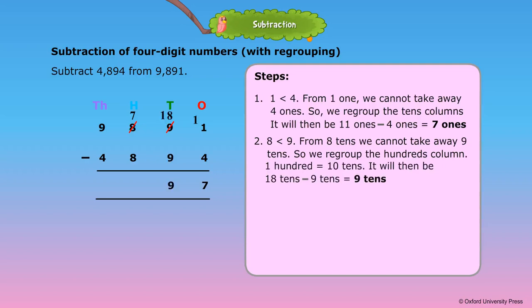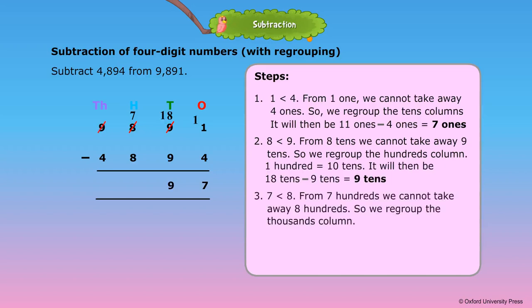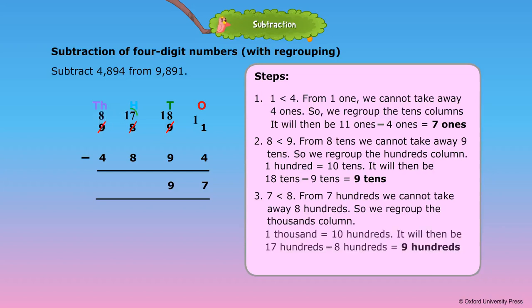Step 3: 7 is less than 8. From 7 hundreds, we cannot take away 8 hundreds, so we regroup the thousands column. 1,000 is equal to 10 hundreds. It will then be 17 hundreds minus 8 hundreds is equal to 9 hundreds. Step 4: 8 thousands minus 4 thousands is equal to 4 thousands.